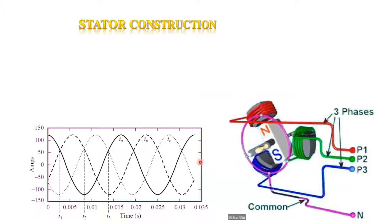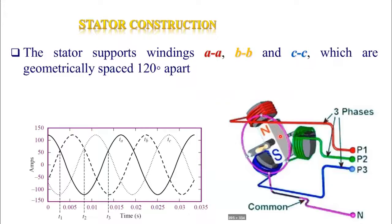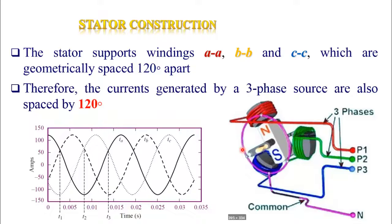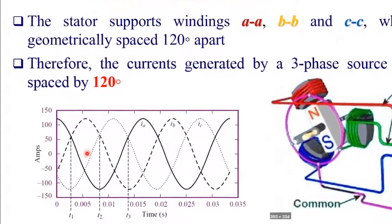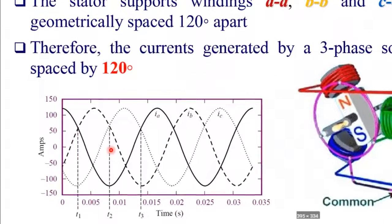The stator of induction is a stationary part which contains three sets of windings, labeled as AA, BB and CC, which are geometrically spaced 120 degrees apart. When these windings are energized by three-phase supply, the currents produced in these windings are also spaced by 120 degrees, as you can see in this diagram.